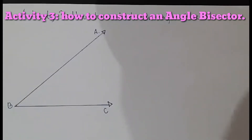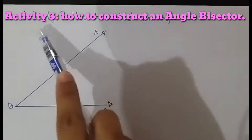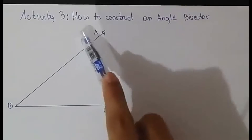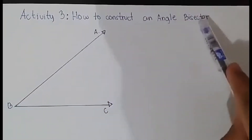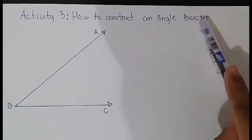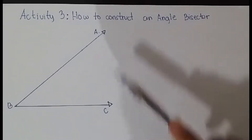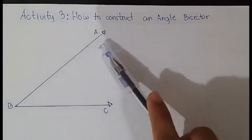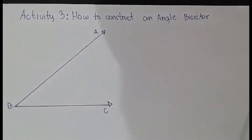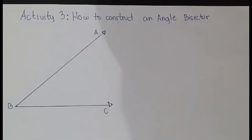So now let's move on to another activity. Now we have Activity 3: How to construct an angle bisector. So let us have an example. Given any angle, let us have angle ABC.